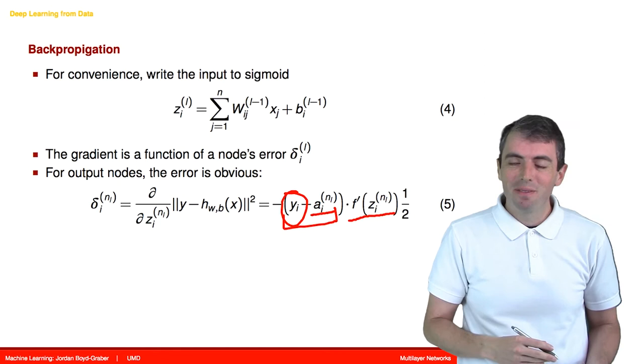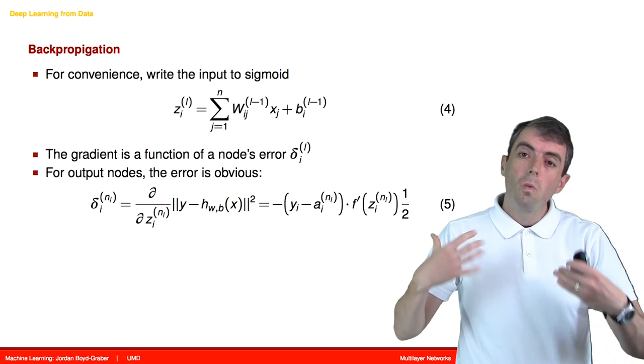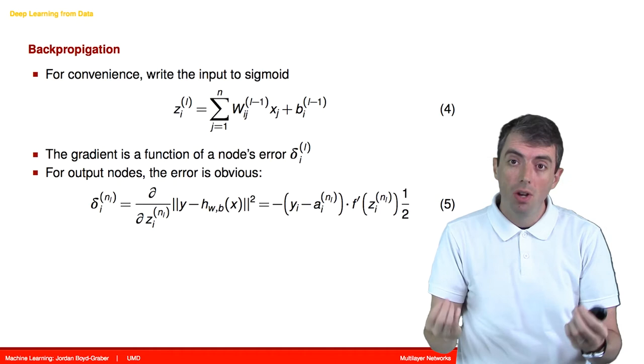This is something you can just look up. We're just applying some rules from calculus. You don't need to actually derive anything here. We are figuring out how to update our weights and biases based on the node error.